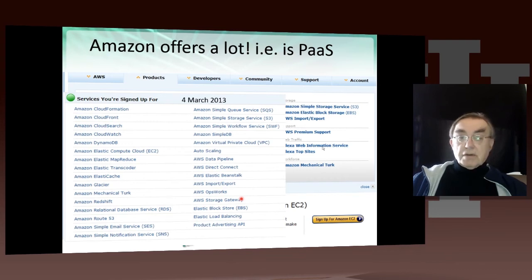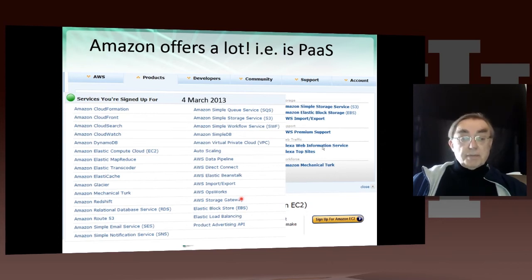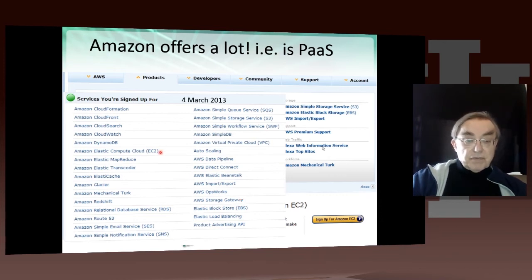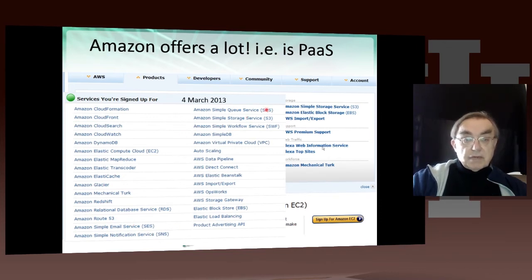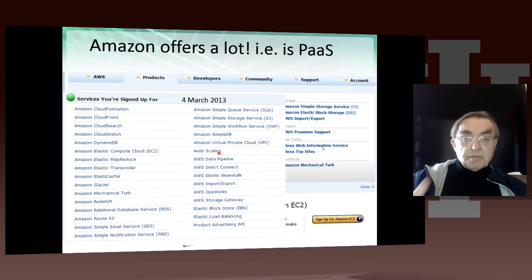Amazon keeps adding more and more capabilities — that's what I mean by saying Amazon is becoming more and more Platform as a Service. Here are the original things: EC2 was the first announcement, then S3, the storage service, and then all these others have come along. Things like autoscaling, which is a feature on top of EC2 to scale up capabilities.